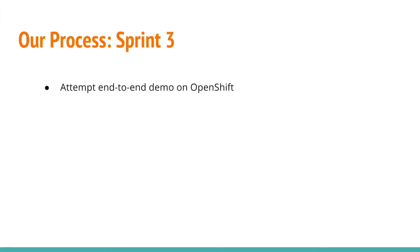During Sprint 3, since we had already been able to run each component locally, our mission was to have a complete end-to-end demo running on OpenShift. However, after much time spent trying to deploy the containerized services, we came to realize that the Process Manager — the main component the entire system seemed to be built around — wasn't written in a way that was compatible with OpenShift. Instead of having separate containers for the Process Manager and the FileIO Manager, both were contained in one Docker container that exposed different ports based on which service was called, which was not compatible with how services are typically exposed on the cloud.